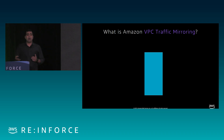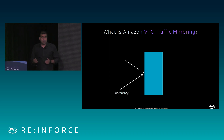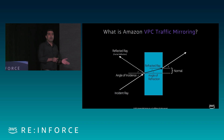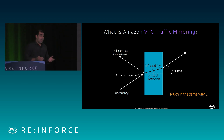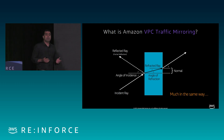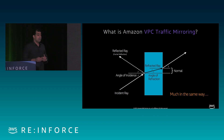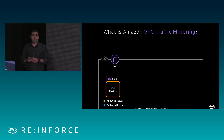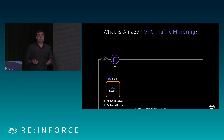It works similar to how light travels between two mediums — an incident ray comes in, part of that light gets reflected and part passes through. In the same way, as network packets flow over your network interfaces, the packets you want to monitor can be sent to monitoring appliances. Let's take a high-level look at how this feature works.